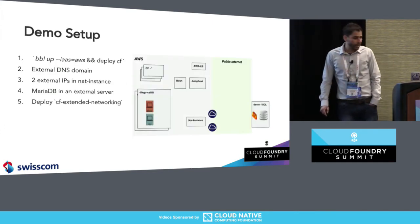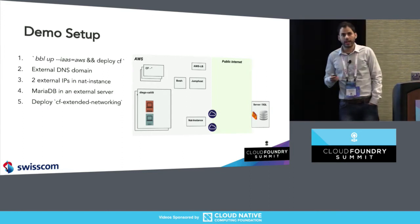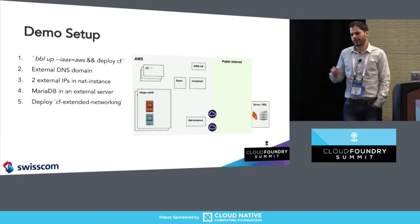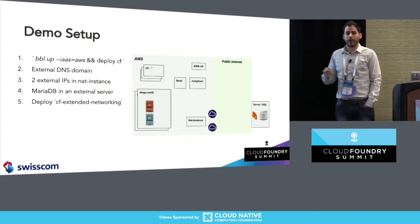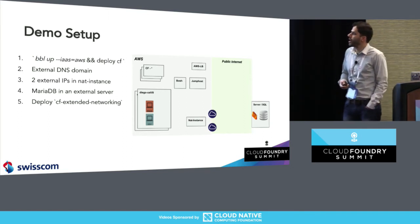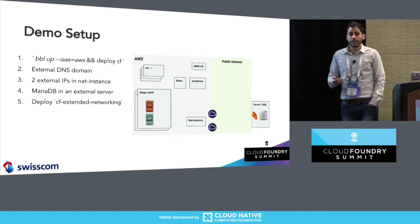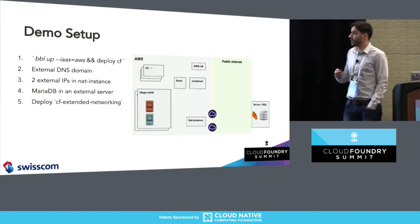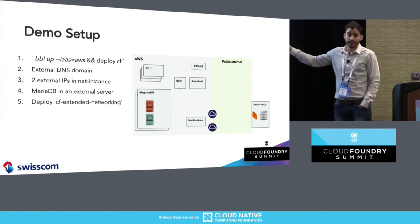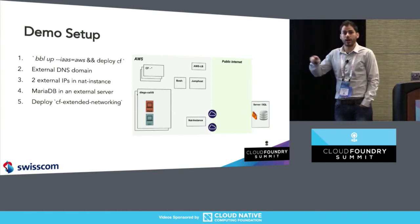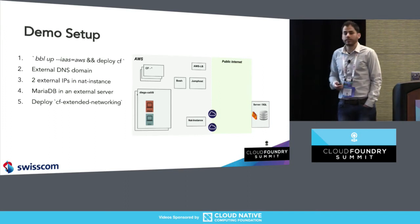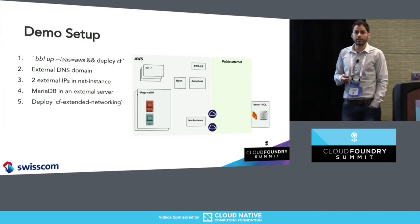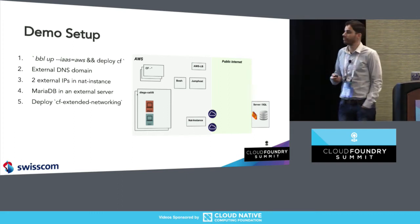For the demo, I could not do it in BOSH Lite because I could not attach two public IPs to my laptop. So I picked AWS. I deployed a bubble app, deployed CF, registered my DNS domain, and then manually had to add two external IP addresses in the NAT instance — the NAT instance from where all the traffic goes out of the container. On the other side, I built a MariaDB service on a server where I control the iptables rules. Then I deployed the CF external networking.